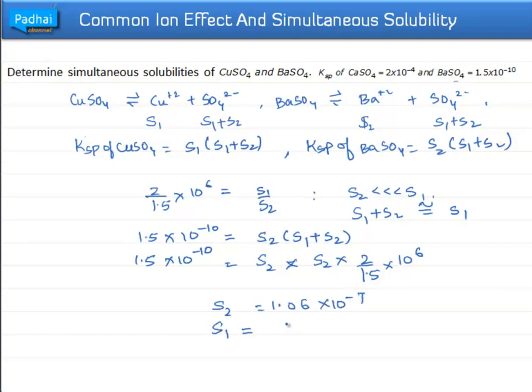We can also find S1, which was 2 by 1.5 times 10⁶ multiplied by S2. S2 is 1.06 × 10⁻⁷.